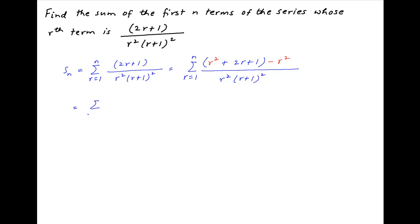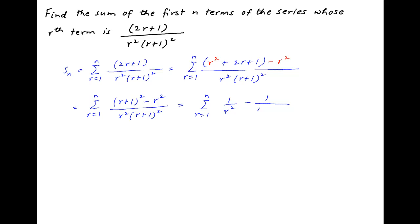This can be written as summation of (r + 1)² minus r², divided by r² times (r + 1)², which equals the summation of 1/r² minus 1/(r + 1)², where r varies from 1 to n.